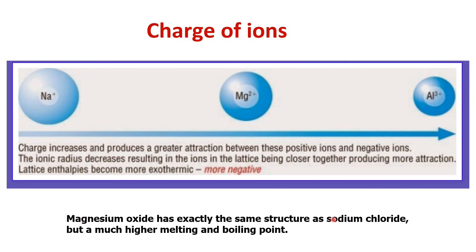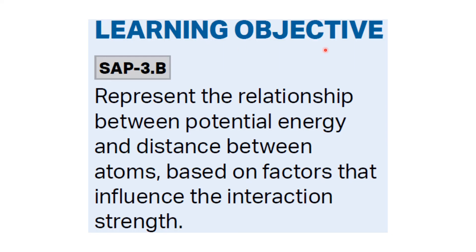To summarize the learning objective: we discussed how potential energy changes with the distance between atoms — specifically the internuclear distance — and the factors that influence this interaction. For covalent compounds, the key factors are atom size and bond multiplicity. For ionic compounds, the key factors are ion size and ion charge.